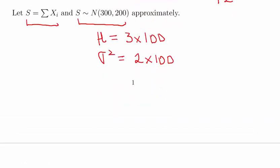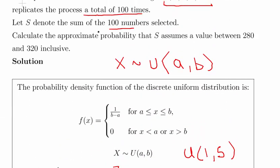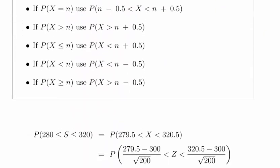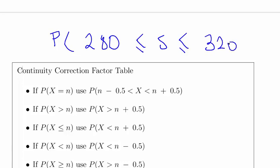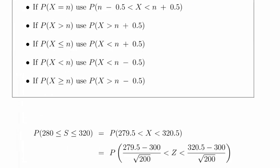Now, the question actually asks: calculate the approximate probability that S assumes a value between 280 and 320 inclusive. So the question here is probability of 280 less than or equal to S less than or equal to 320.